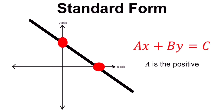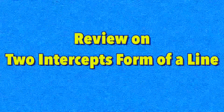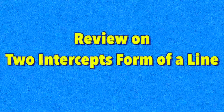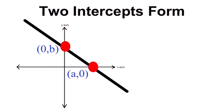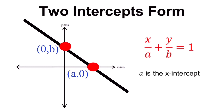We also use standard form in solving systems of equations. If we are given two intercepts of a line — (0, b) as the y-intercept and (a, 0) as the x-intercept — we can use the formula x/a + y/b = 1, where a is the x-intercept and b is the y-intercept. This is called the two-intercept form, or double intercept form, of a line.